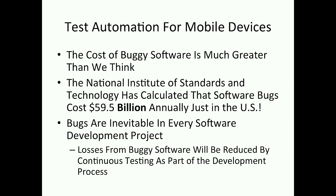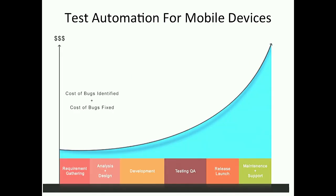But let's talk about test automation for mobile devices in terms of bugs. The cost of buggy software is much greater than we think. The National Institute of Standards and Technology, part of the U.S. Department of Commerce, calculates that software bugs cost $59.5 billion — that's billion with a B — every year just in the U.S. So bugs are expensive, and that's including your technology also. Bugs are an inevitable part of every software, but proper testing and early testing will hopefully reduce the cost of your bugs.